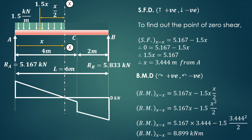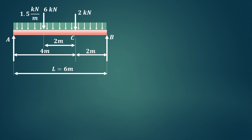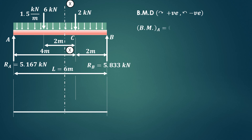Now we draw the bending moment diagram. For the section between A and C, the UDL of 1.5 kN/m over 4 meters converts to a 6 kN point load acting at 2 meters from A. At section XX the bending moment is 8.899 kN·m as already calculated. Bending moments at the supports A and B are both 0, as expected for a simply supported beam.